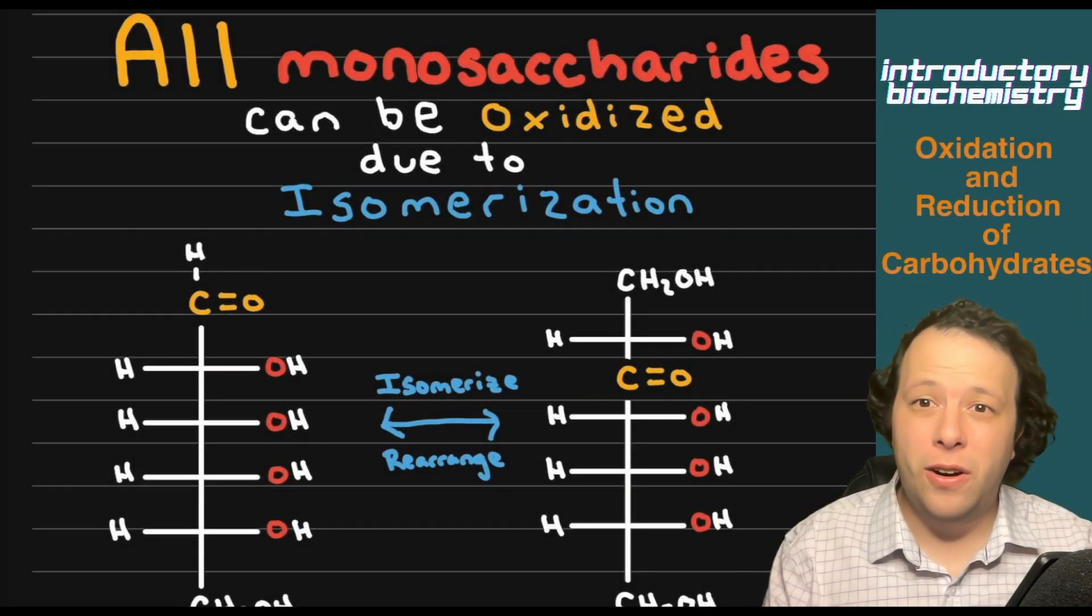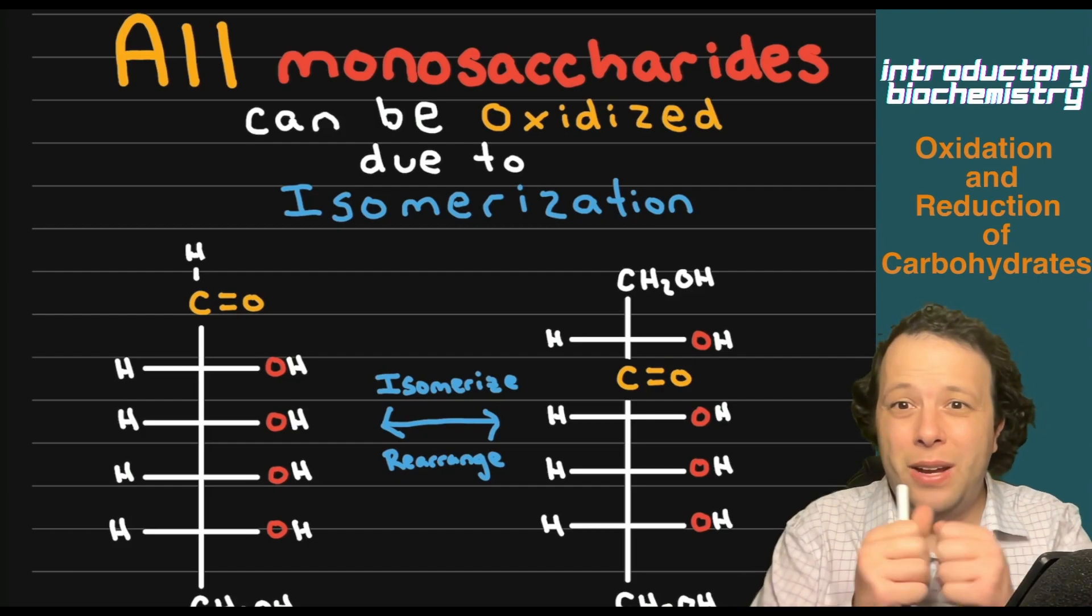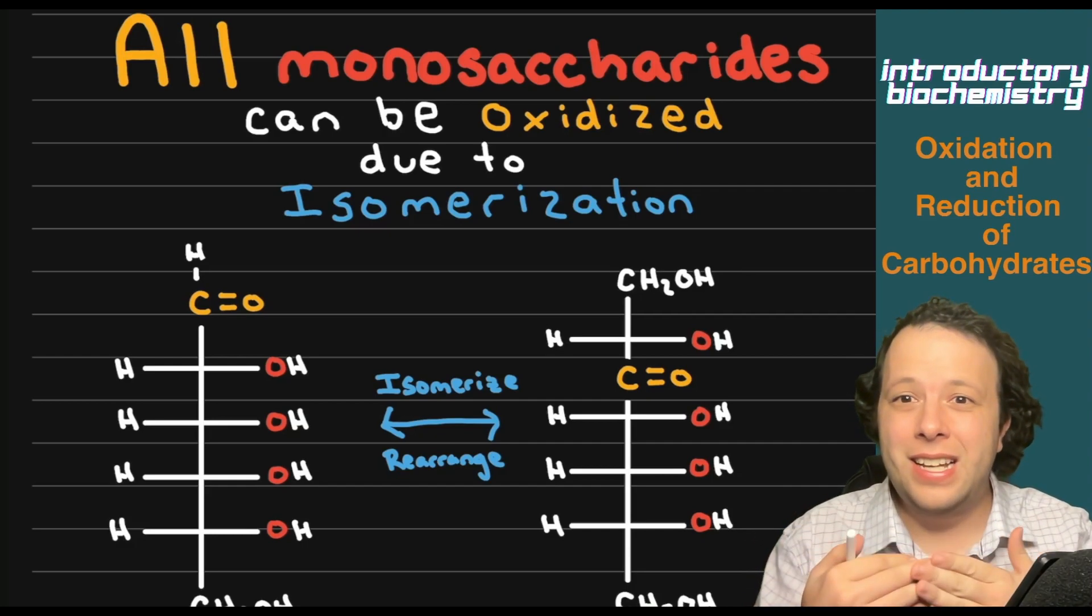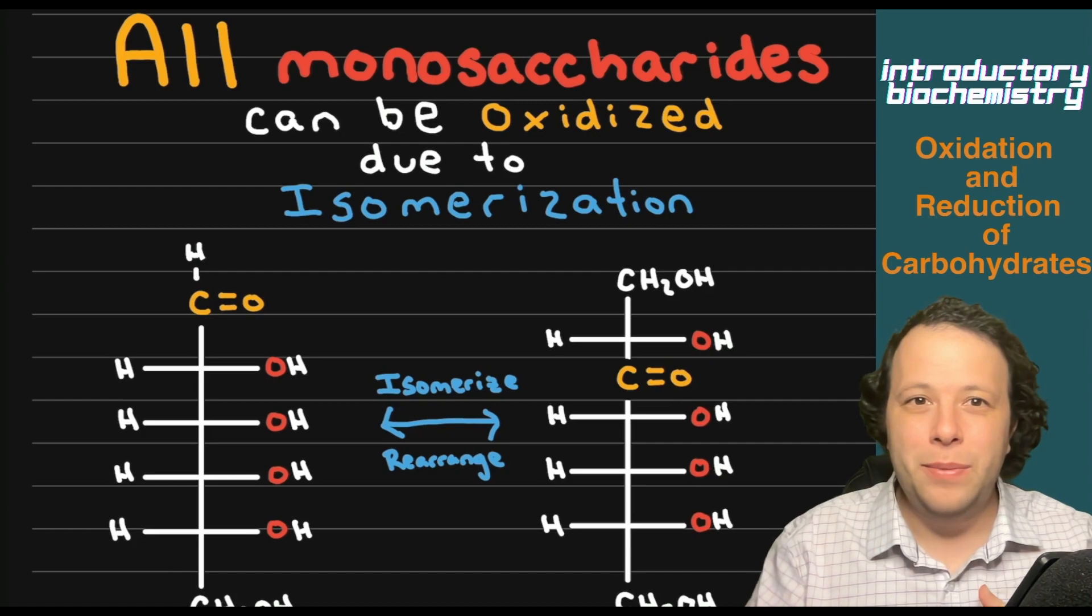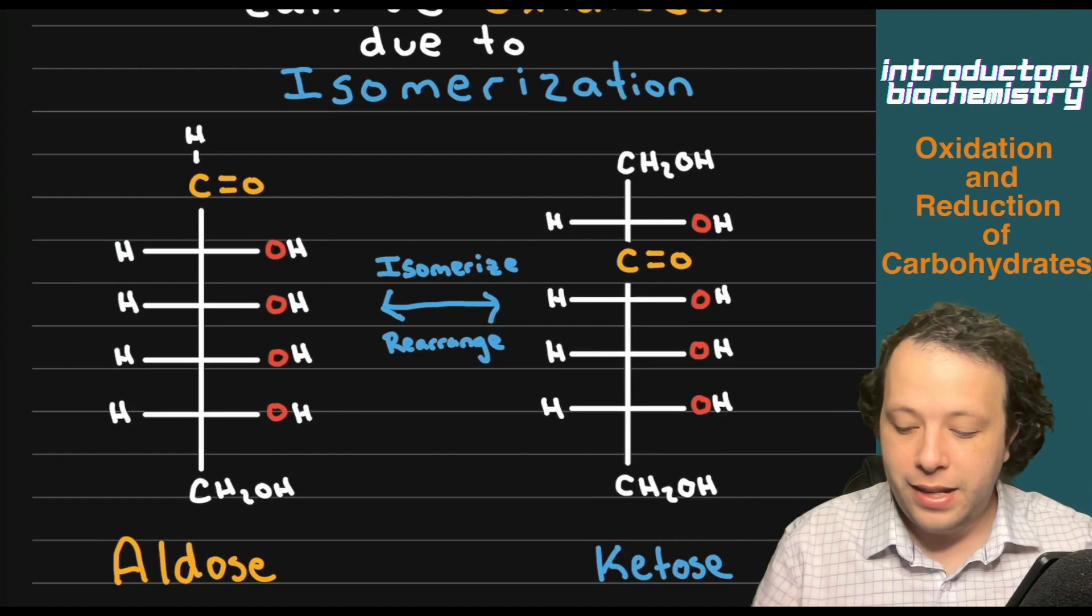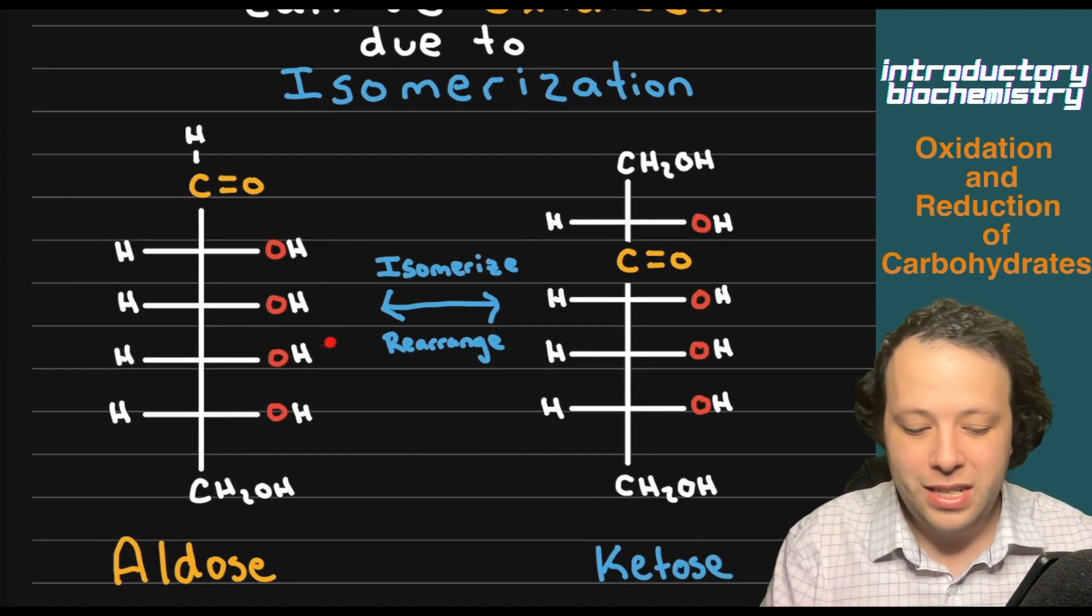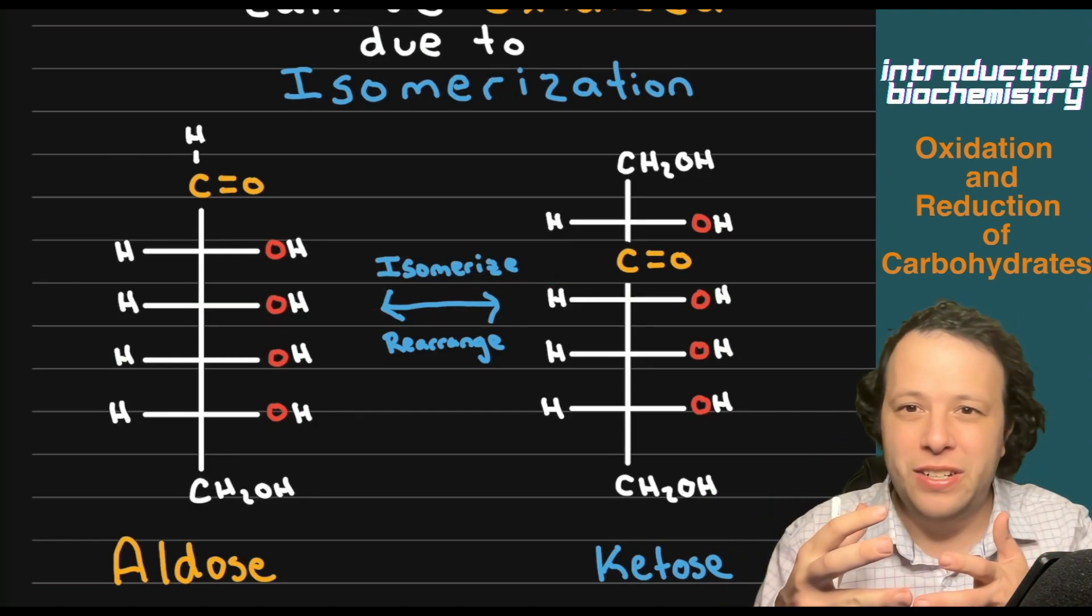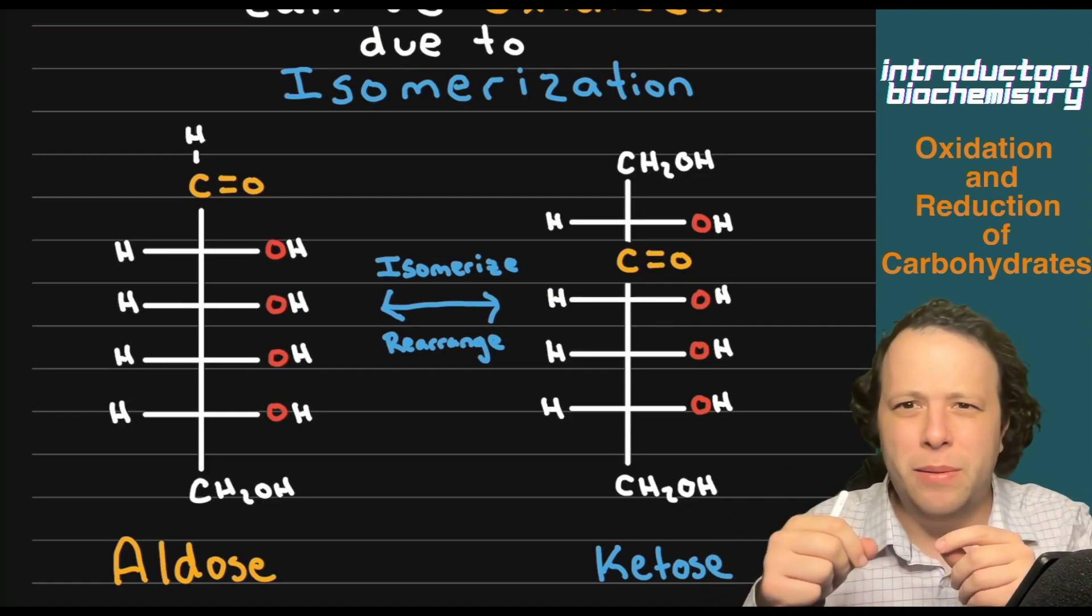The first thing is that all monosaccharides can be oxidized. When that Haworth or cyclic shape opens up and unfolds, it is able to be oxidized. You might be thinking back to organic chemistry that only aldehydes can oxidize. However, these chemicals, aldehydes and ketones, can isomerize between the two, meaning they can rearrange themselves, like taking Legos and rebuilding a completely different shape.